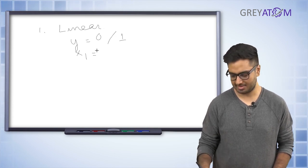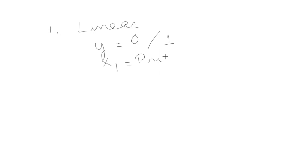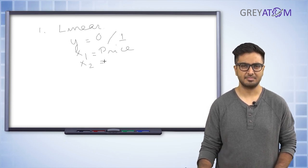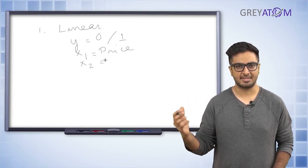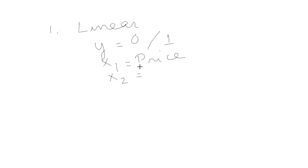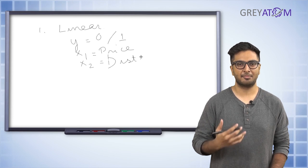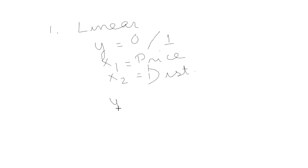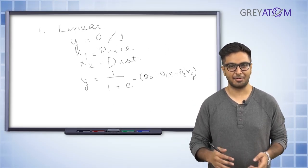Let's say x1 is price of the tickets, and x2 is distance of the movie hall. You might say that if the distance is very far, you probably won't go — and vice versa. These are two variables, and when I say linear algorithms, I mean that if your decision is 1 or 0, you can plot it using some kind of linear algorithm.